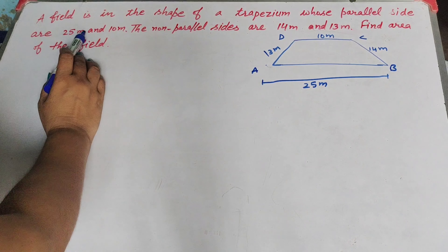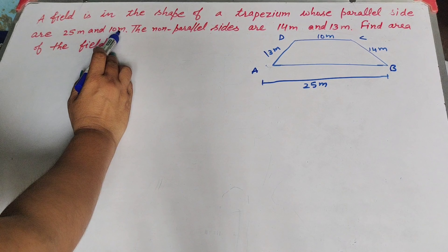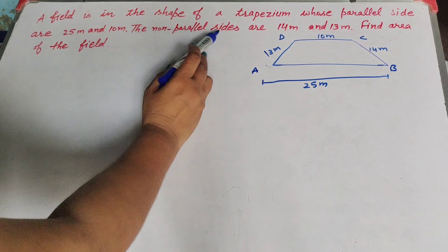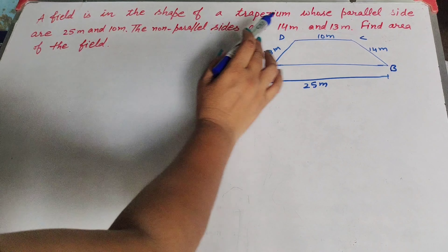Hello friends, welcome to my channel. In this video we discuss a field in the shape of a trapezium whose parallel sides are 25 meter and 10 meter, the non-parallel sides are 14 meter and 13 meter. Find the area of the field.